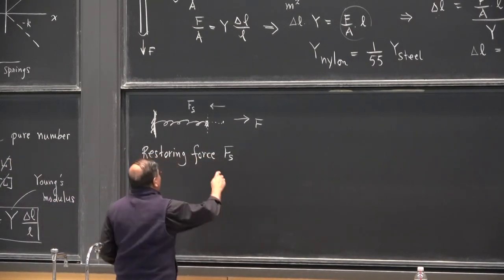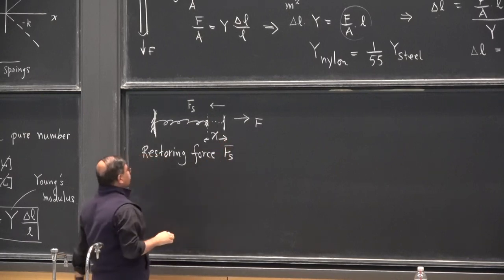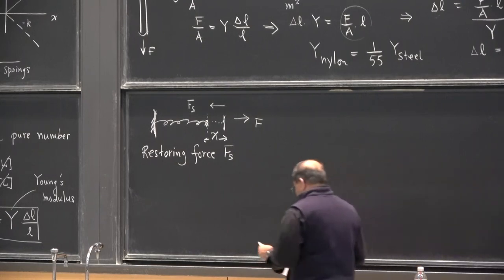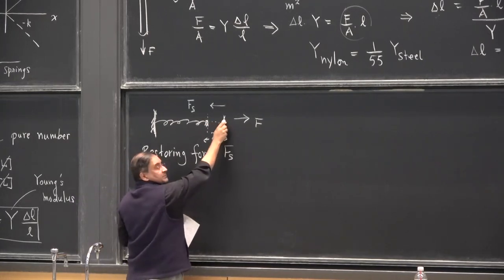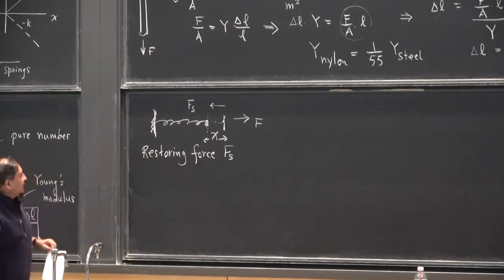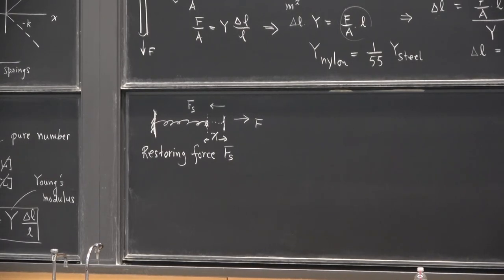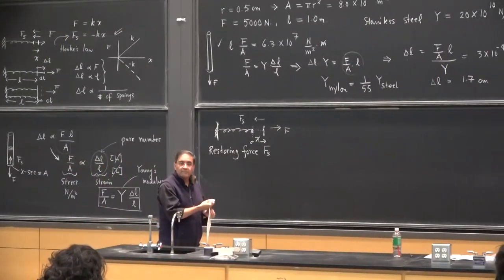I have now stretched it, and this has been stretched by some amount x. If I now track what happens to the spring as it moves back and forth, I would see some interesting things. Just imagine the spring has been stretched and you let it go — then the spring comes back to its relaxed position, overshoots, compresses, the spring pushes back, goes back to its relaxed position, can't stop, goes back to its stretched position, and this repeats.